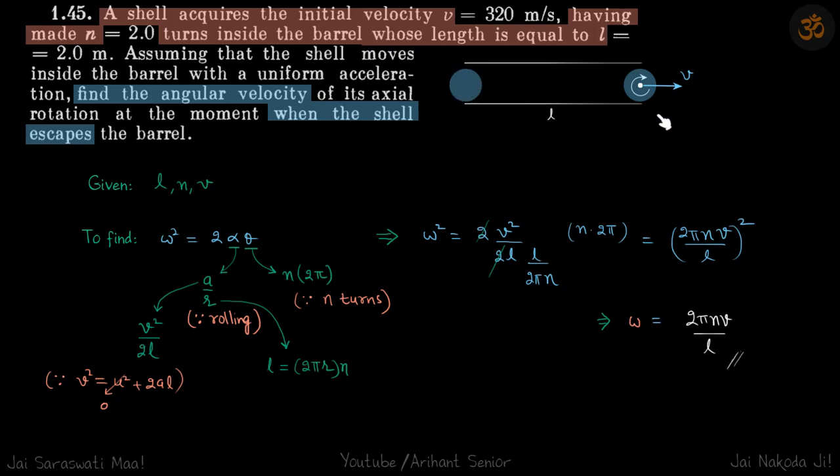We have a shell that escapes the barrel with velocity v. Length of the barrel is L and it's given that it takes n turns before escaping the barrel. The acceleration is uniform and we need to find the angular velocity of the shell when it escapes.